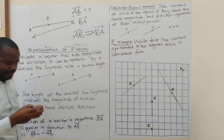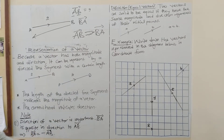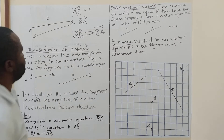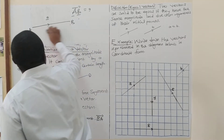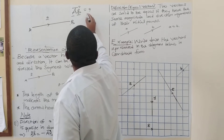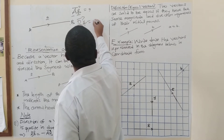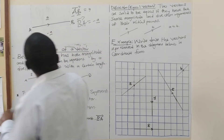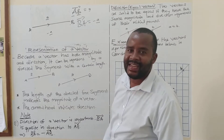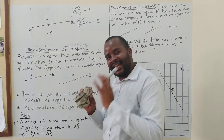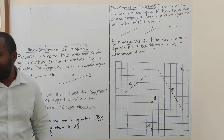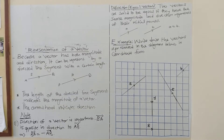Take note: AB and BA are not the same. BA equals negative AB, meaning when you reverse the direction it becomes negative 'a'. If AB is vector 'a', then BA is negative 'a' because it is opposite. Direction is very very important — that is how you represent a vector.